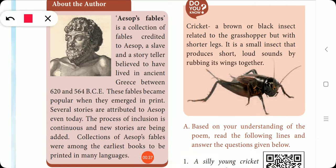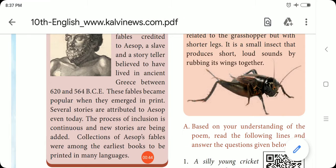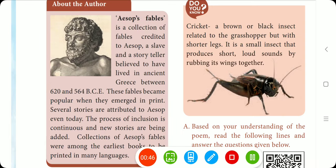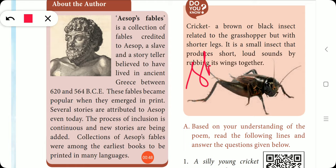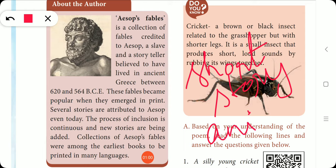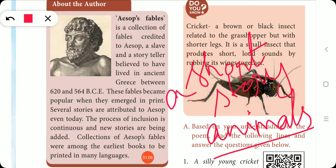What is a fable? A fable is a short story, typically featuring animal characters. Usually the characters in fables are animals.